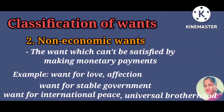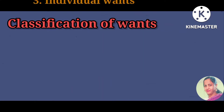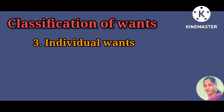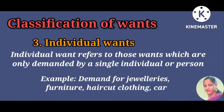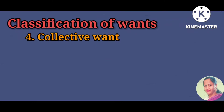Next, individual wants. Individual or personal wants refer to those wants which are demanded by a single person or an individual only. For example, demand for jewelry, ornaments, furniture, haircuts, clothing, and cars — all the examples discussed under economic wants become individual wants, because these are a person's own wants.